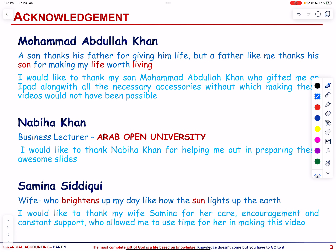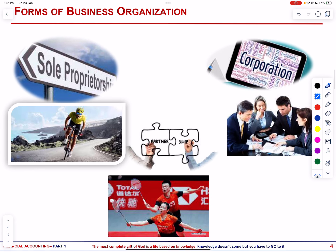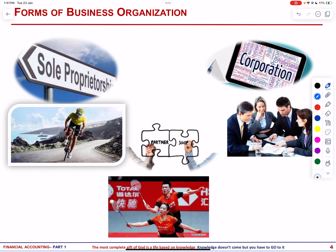So let us start with the forms of business organization. The choice of business organization has significant implications for entrepreneurs. A sole proprietorship business is owned by one person. It is simple to set up, it provides control over the business, and it is common in small owner-operated businesses like barber shops, law offices, auto repair shops, farms and retail stores.